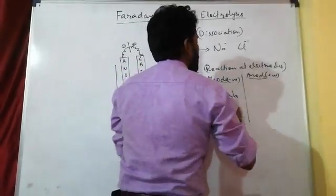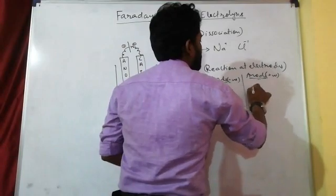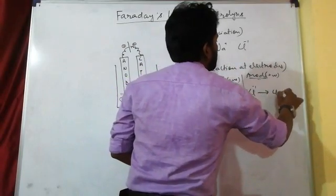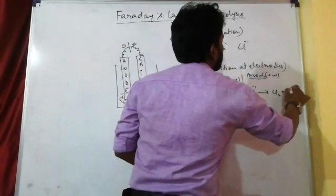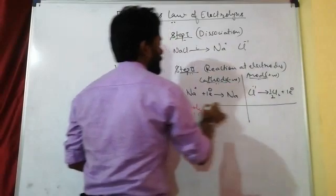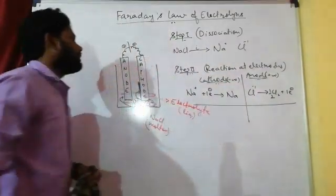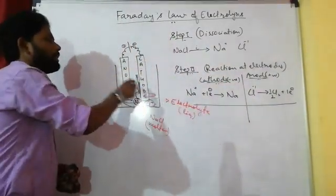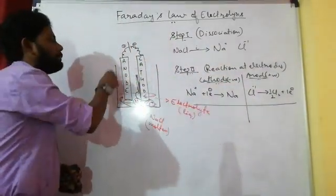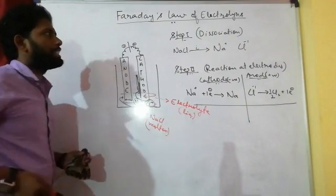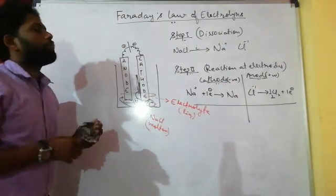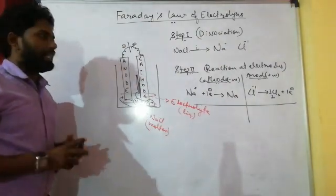Cl⁻ moves to the anode, which is positive. It absorbs an electron, and Cl⁻ becomes Cl₂ gas. So at the cathode we get sodium metal deposited, and at the anode chlorine gas is liberated in the gaseous phase.